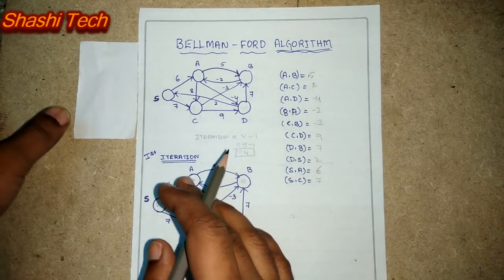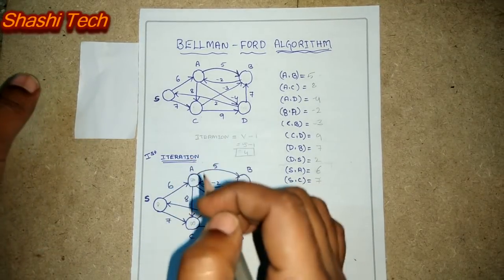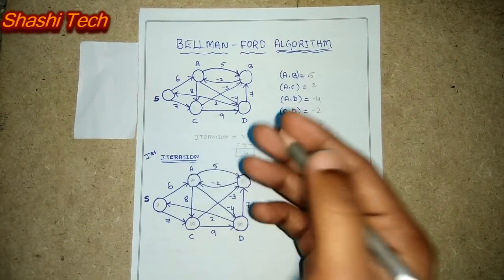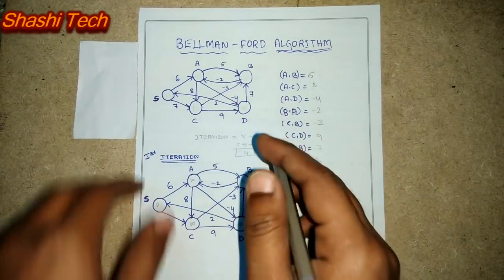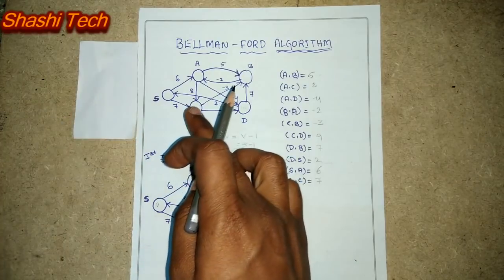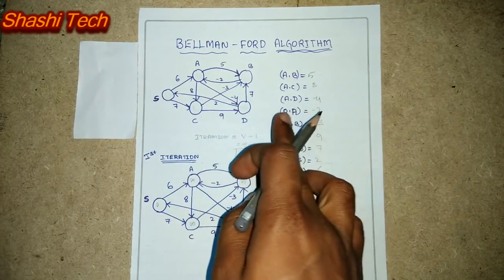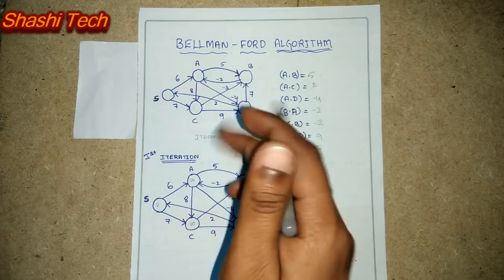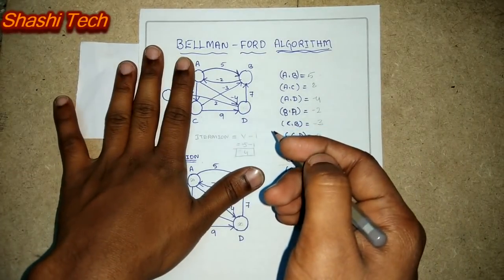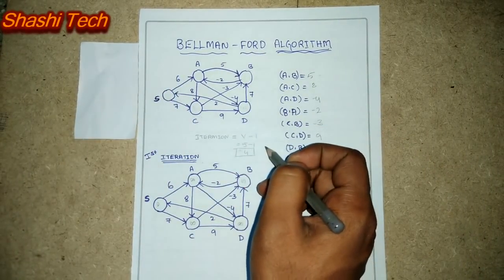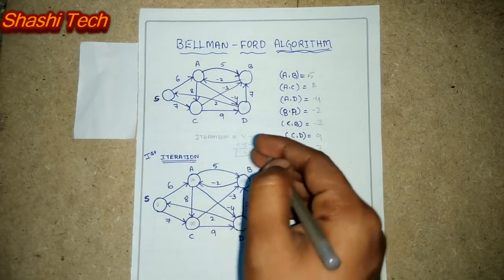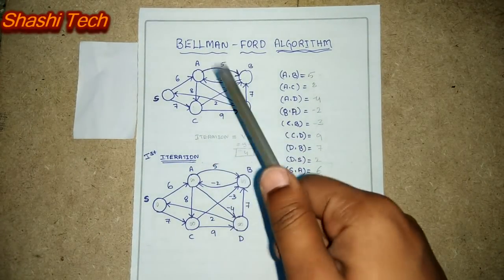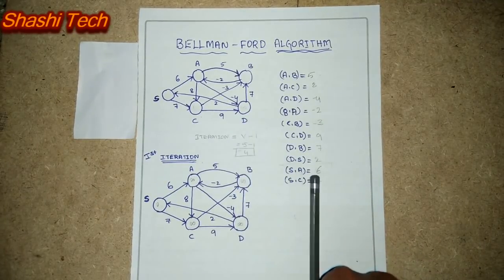How many times are you going to do the iteration? Not only in this particular graph — whatever graph you get, the number of iterations is the number of vertices minus 1. That is the formula: number of vertices minus 1. If you have 4 vertices, you do 4 minus 1 iterations. Here we have 5 vertices, so you need to do 4 iterations.